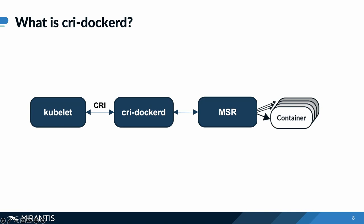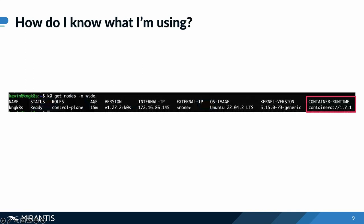To find out, it's actually pretty straightforward. If you go into your cluster and use kubectl, you can check your container runtime using the kubectl get nodes command. If you do a get nodes with output wide, it'll give you the information for your container runtime. If you look at the far right of your output, your container runtime will tell you exactly what type of runtime it's using.